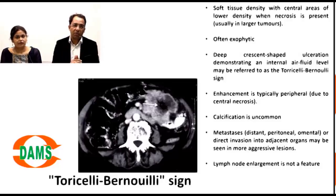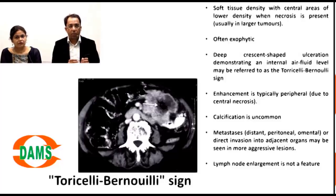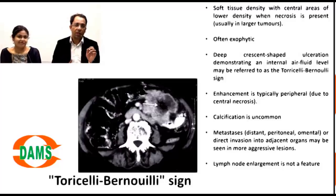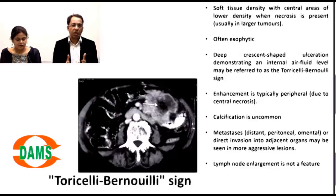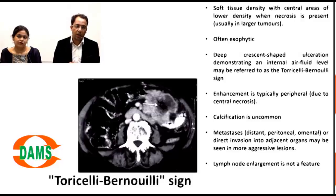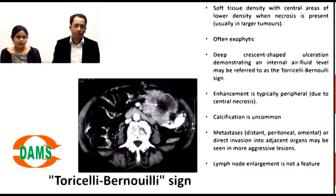An important radiological point: lymph node enlargement is usually not a feature of GIST. You may see local invasion of surrounding structures or distant metastasis, but lymph node enlargement is not typical. Calcification is also uncommon in this tumor. The stomach and small bowel are the classic sites to look for GIST.